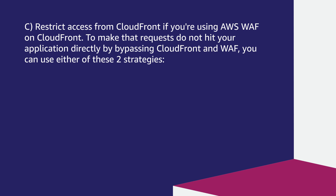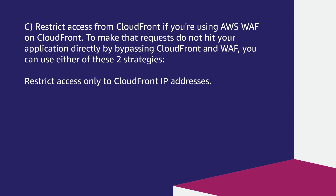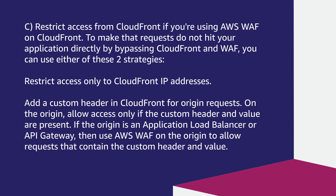Restrict access from CloudFront if you are using AWS WAF on CloudFront. To make sure that requests do not hit your application directly by bypassing CloudFront and WAF, you can use either of two strategies: restrict access to CloudFront IP addresses, or add a custom header in CloudFront for origin requests and allow access only if the custom header and value are present. If the origin is an Application Load Balancer or API Gateway, use AWS WAF on the origin to allow only requests that contain the custom header and value.